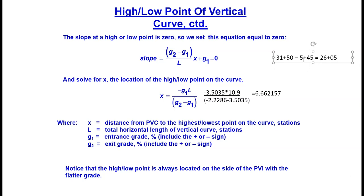Now we add our x value to our PVC station. So PVC of 26+05 plus our x value of 6+66.2157 gives us a station of our high point of 32+71.22. That was one part of the question for the high point: the station.